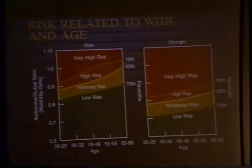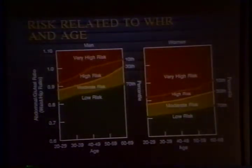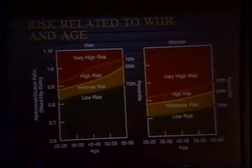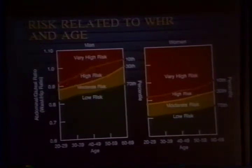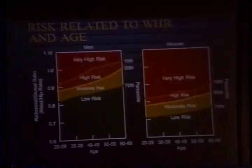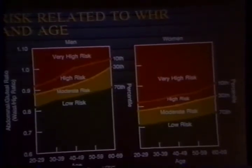We use waist-hip ratio to clinically assess fat distribution. If an individual has an elevated waist-hip ratio, he or she is at greater risk for diseases associated with obesity, such as diabetes, hypertension, and the hyperlipidemias. Looking at age on the x-axis and waist-to-hip ratio on the y-axis, men in the very high-risk category have elevated waist-to-hip ratios. Women normally don't have an upper-body fat distribution, but as waist-hip ratio increases, so does risk associated with obesity.